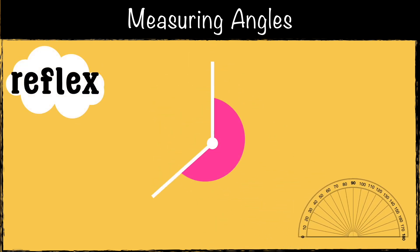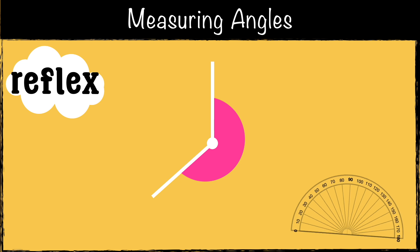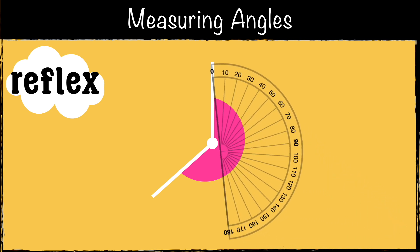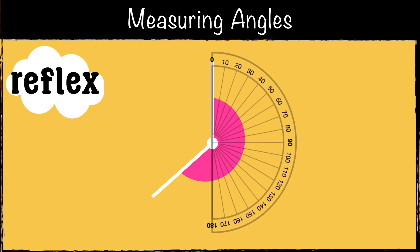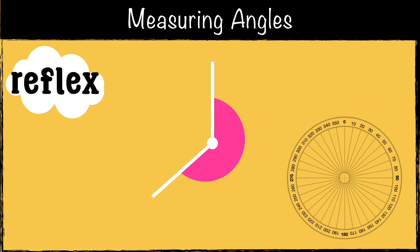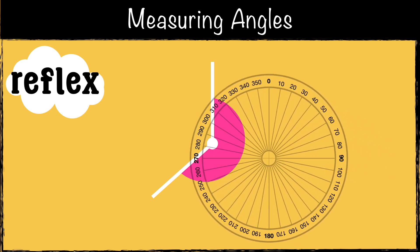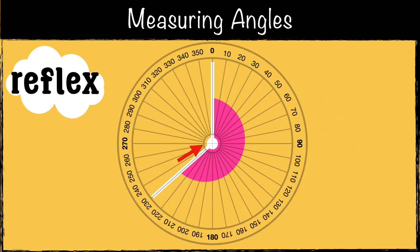Now let's measure a reflex angle. As you can see, this protractor only measures up to 180. So for angles that are larger than 180, we need to use a full circular protractor. We place the center point of the protractor exactly where the two lines meet. Line up the zero degrees mark with one of the lines. Follow the second line outwards to see where it crosses the protractor scale. So this angle is 230 degrees.